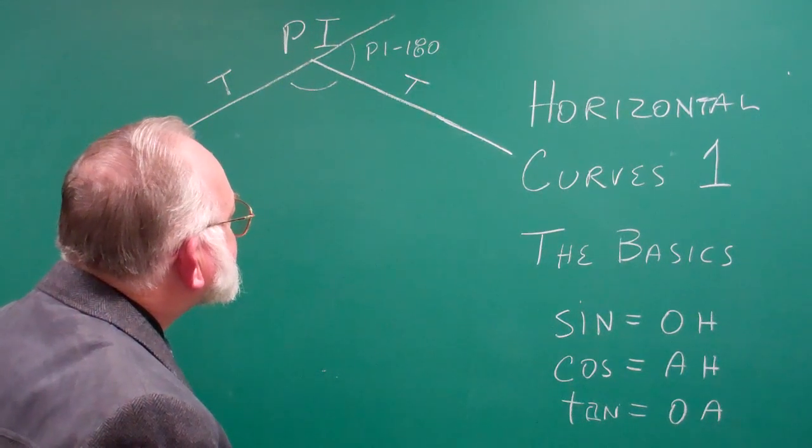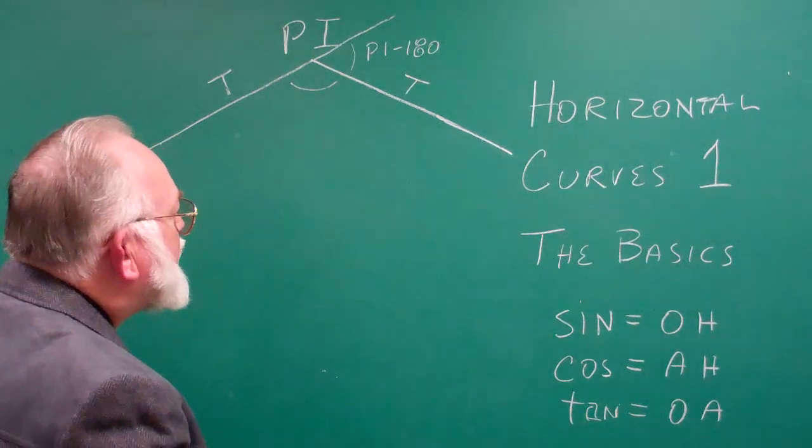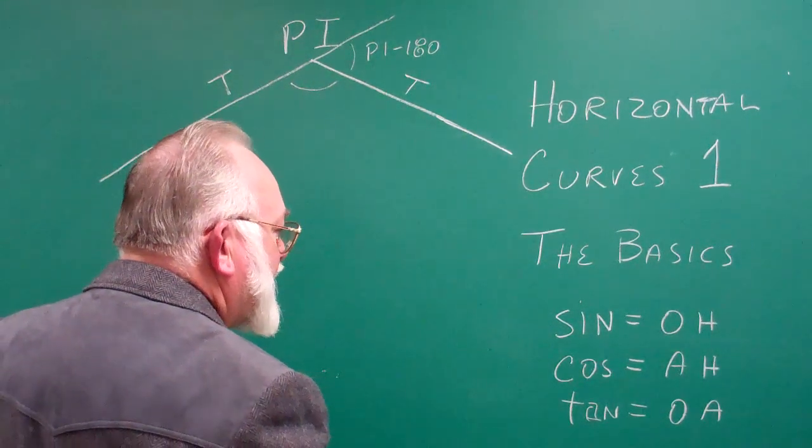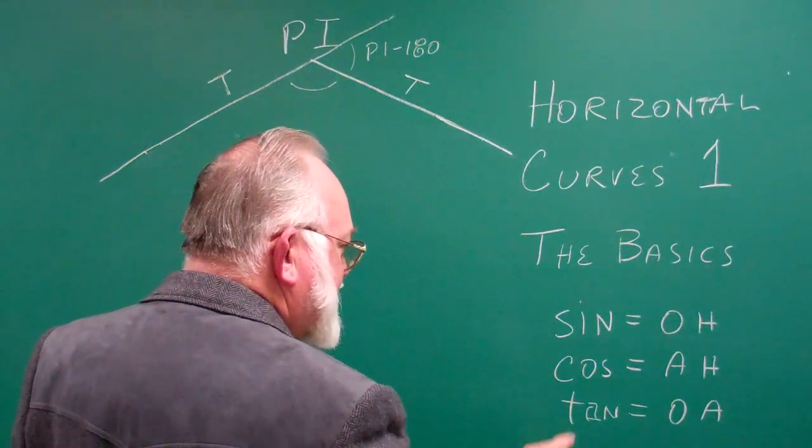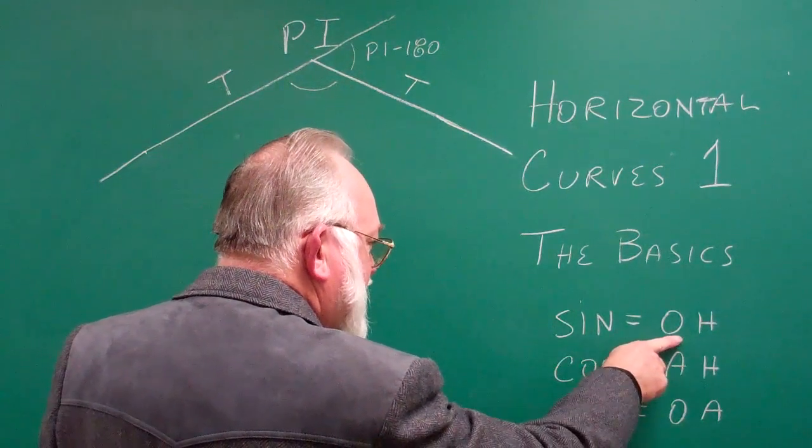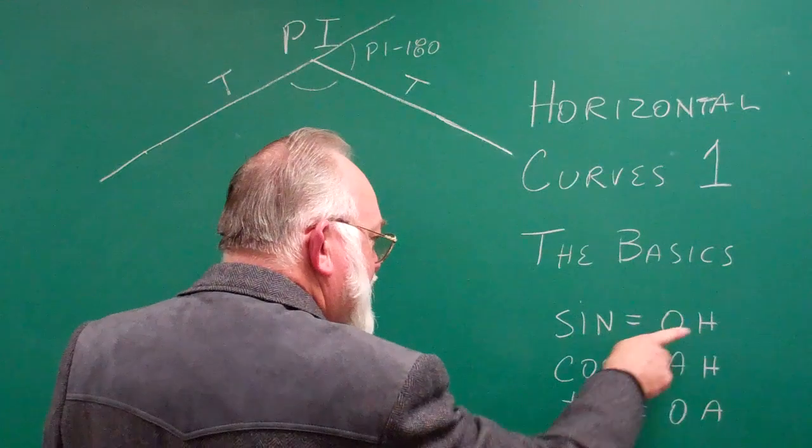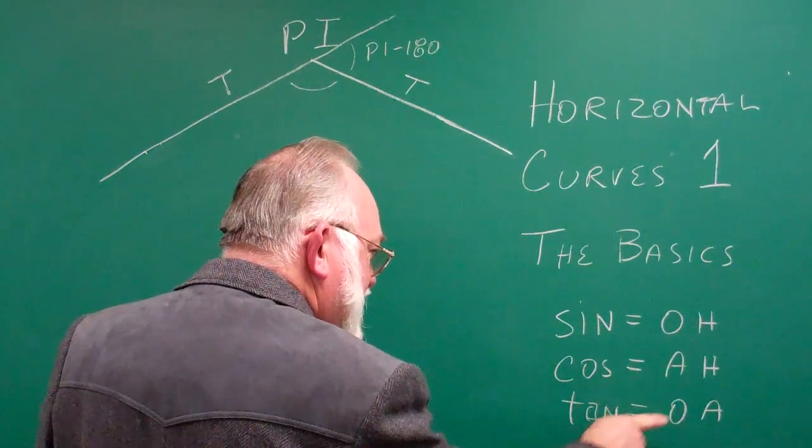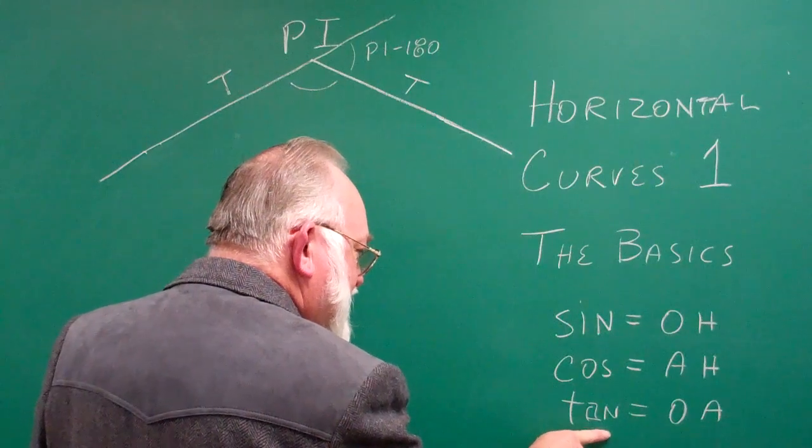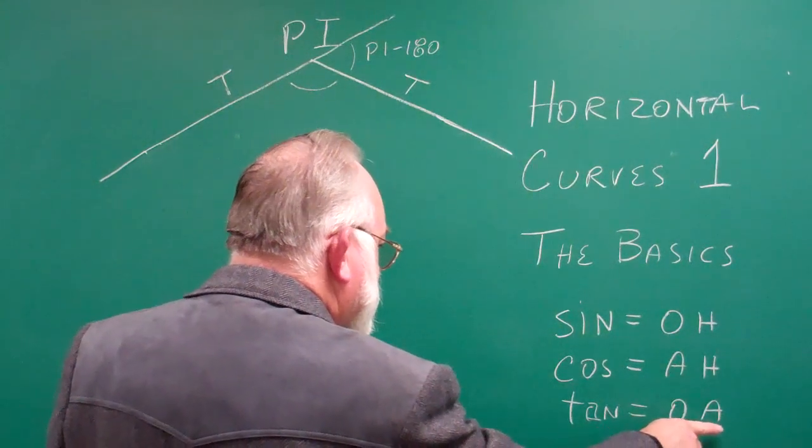In your study of right triangles, you know that in any right triangle for any angle except for the right angle, the sine of the angle is equal to the opposite side over the hypotenuse, the cosine is equal to the adjacent over the hypotenuse, and the tangent of the angle is equal to the opposite over the adjacent.